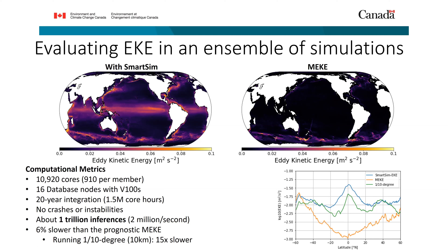We did this in an ensemble: 11,000 cores total, 910 cores per member, 16 nodes doing inference with V100 GPUs. We integrated for 20 full years with no crash instabilities — about 1.5 million core hours and a trillion inferences over roughly a week. It was only about 6% slower than using the previous prognostic equation, which is completely acceptable — because running a 10-kilometer model would be 15 times slower. We're happy to take a 6% performance hit to get much better physics while still running the model at coarse resolution.